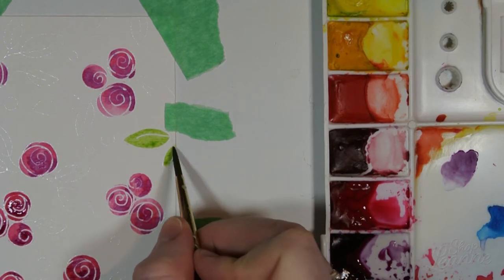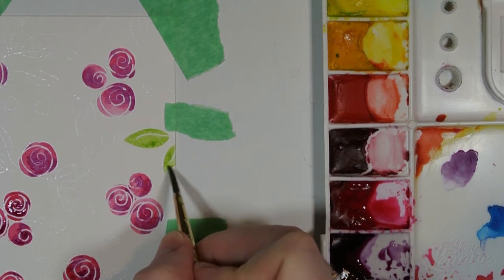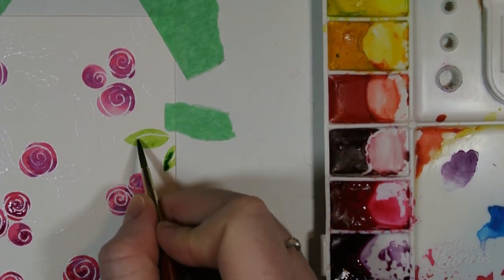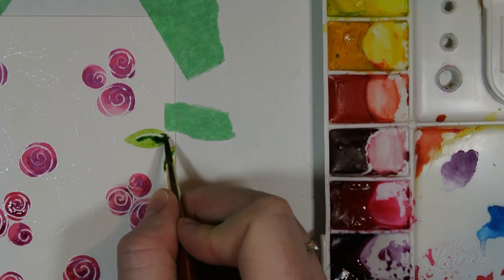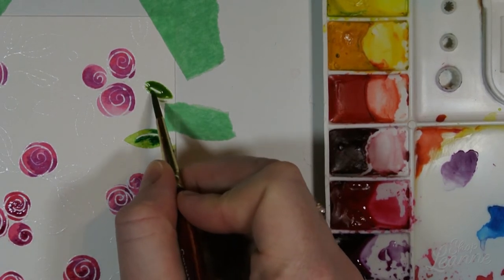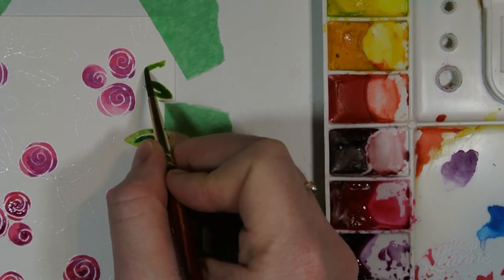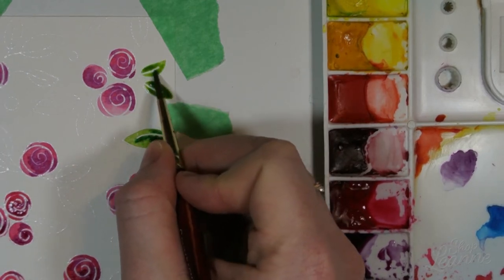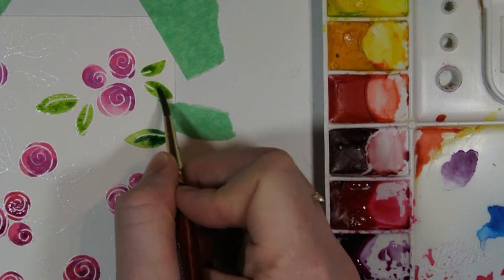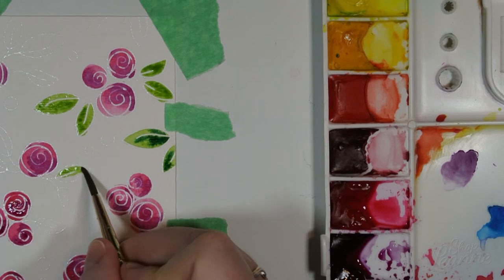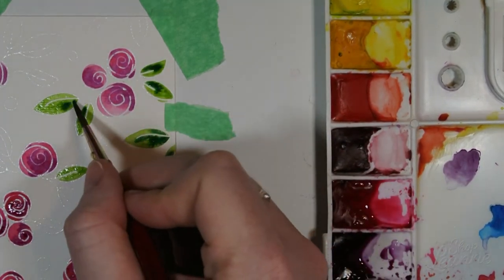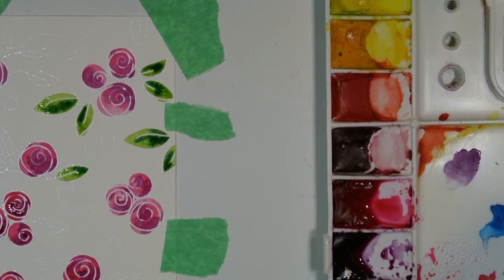Now for the leaves I'm using a combination of Sap Green and Hooker's Green Light, and I'm using the exact same technique as I used with the rosebuds. I'm putting down a layer of Sap Green first and making sure that it's pretty damp, and then coming back in with a drop of Hooker's Green Light just to add the shadow or the gradient color. You don't have to use the exact same colors I'm using. If you had a green and a blue, you could use the blue as the shadow and it would blend with the green.